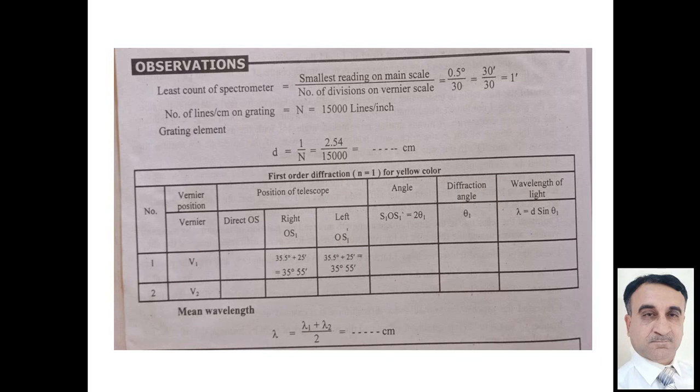This is the least count of the spectrometer. Number of lines on the grating, there is an answer of 15,000 lines per centimeter. So grating element d is equal to one over n. If we solve it, the grating element d, n is the number of lines given, that is 15,000 lines per inch.